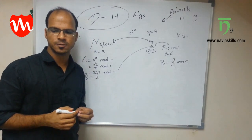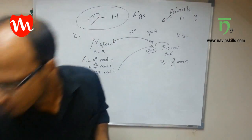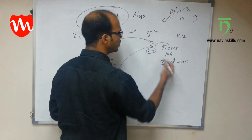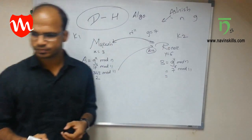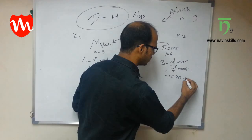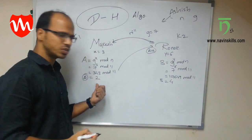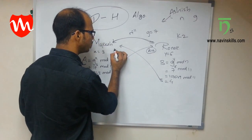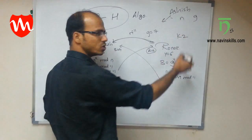Ronak calculates a value 'b' using the formula: b = g^y mod n. With g = 7, y = 6, and n = 11: 7^6 = 117,649, and 117,649 mod 11 = 4. So b = 4. Ronak sends this value b = 4 to Mukesh. Now Mukesh knows b = 4 and Ronak knows a = 2. Ashish also knows both a and b, but does not know x or y.